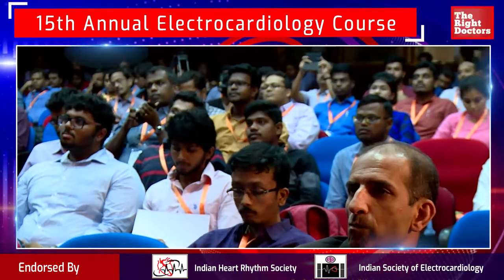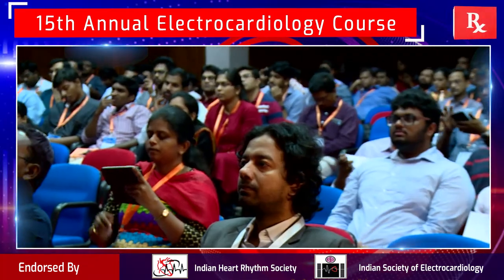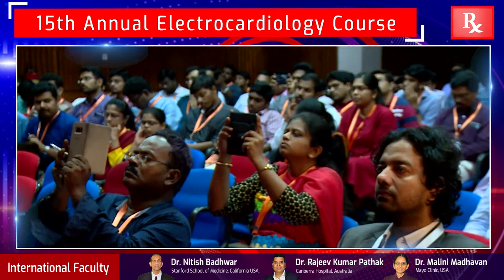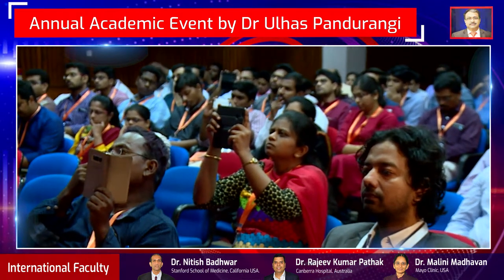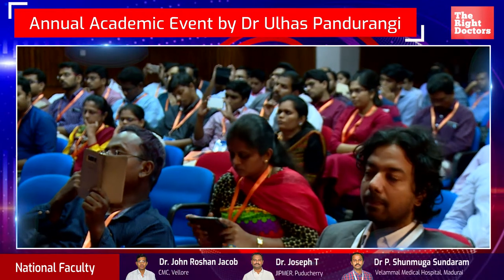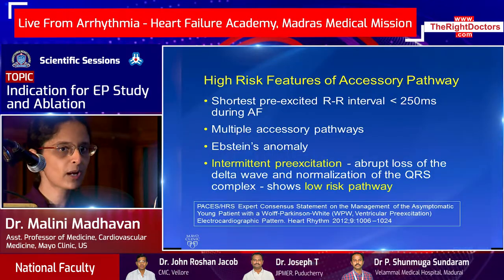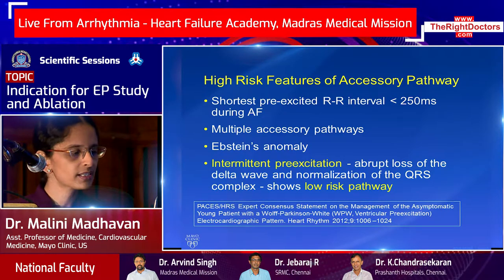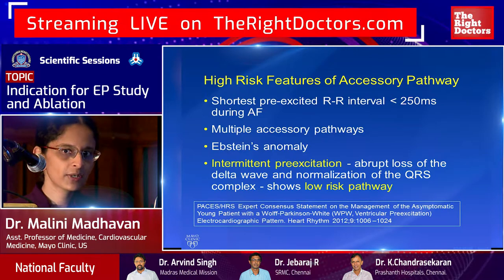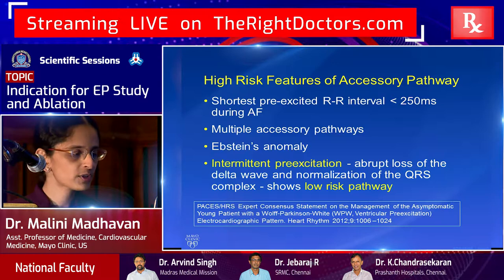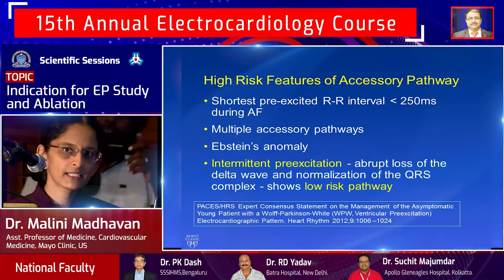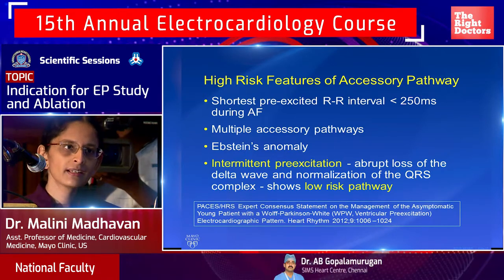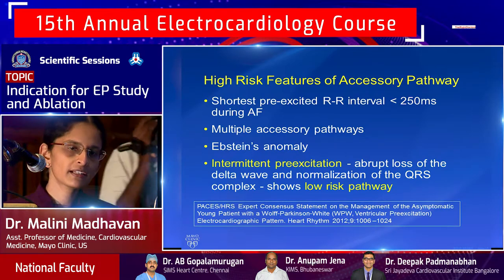High-risk features of an accessory pathway: a shortest pre-excited RR interval less than 250 milliseconds during atrial fibrillation suggests a potentially high-risk pathway. Multiple accessory pathways — uncommon unless in Ebstein's anomaly patients — also carry higher risk. Conversely, intermittent pre-excitation with abrupt loss at a normal rate, as shown, is a reassuring sign that sudden cardiac death risk is not high.